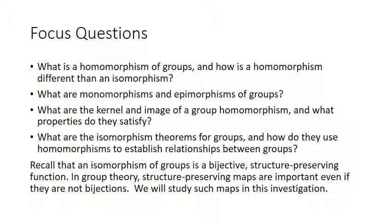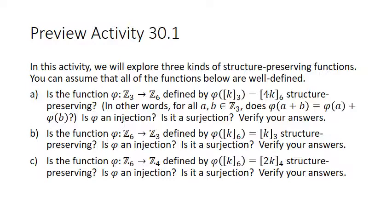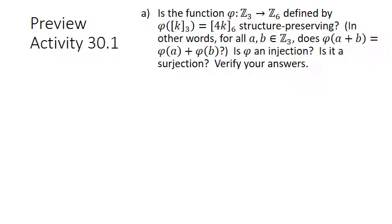We have a preview activity to start. We're going to check whether functions are structure-preserving, injective, and surjective. Here's what we're actually checking: does phi of A plus B equal phi of A plus phi of B? We're using addition on both sides because both the integers and Z5 are additive groups. We check this for all A, B in the domain Z.